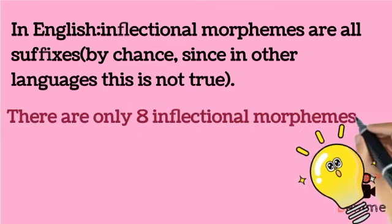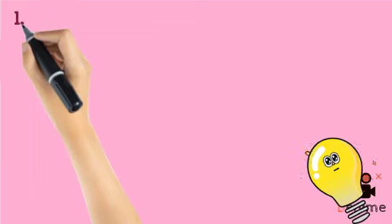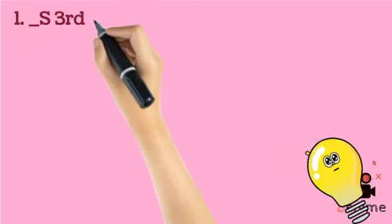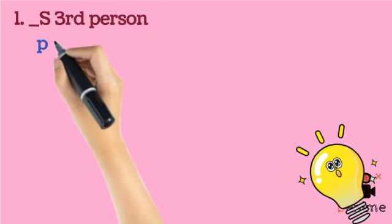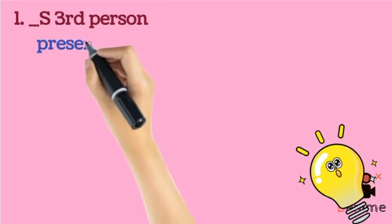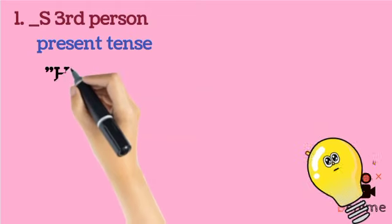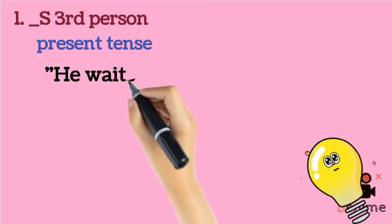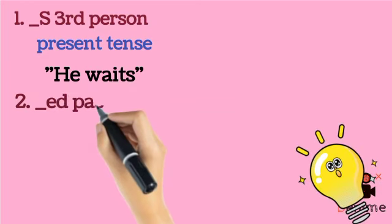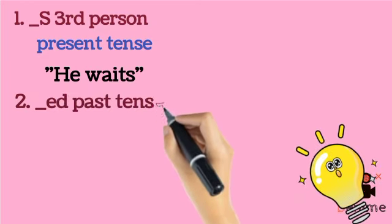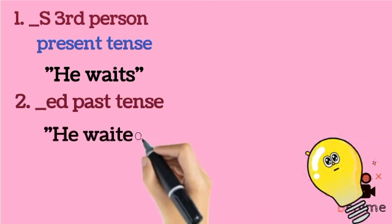There are only 8 inflectional morphemes in English. The first inflectional morpheme is -S, which works as a third person present tense. For example: he waits. The second inflectional morpheme is -ED, used as a past tense. For example: he waited.